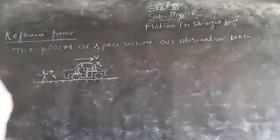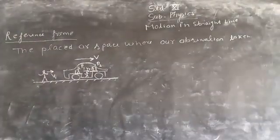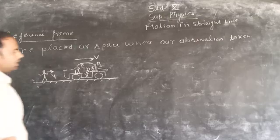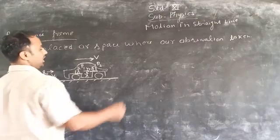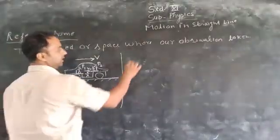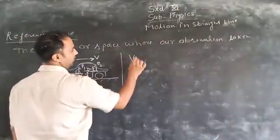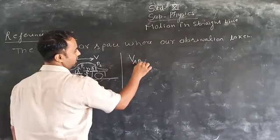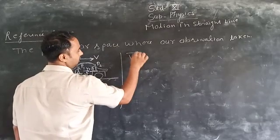The place or space where observation is taken is the reference frame. From this, a concept of relative velocity is coming.